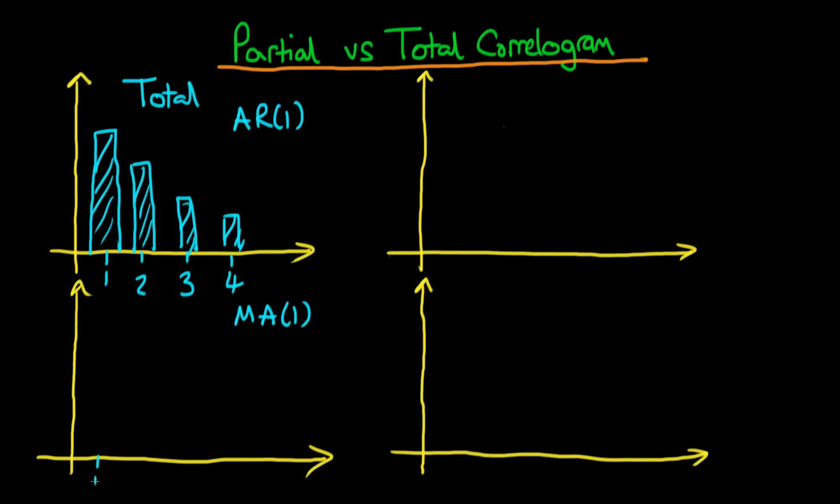If I now draw what an MA1 correlogram will look like it will look completely different. An MA1 process is a process such that XT is equal to some error ET plus theta times ET minus 1. So XT is correlated with itself at the zeroth lag and it's going to be correlated due to this ET minus 1 term with the first lag of itself.